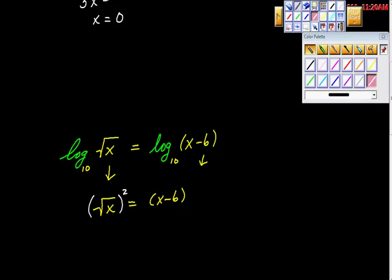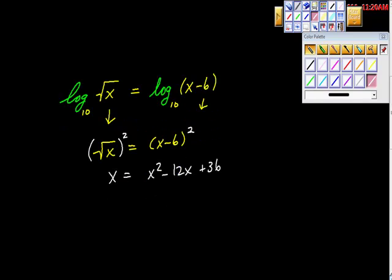And then we start solving. Now we're just finally back to some simple algebra. If we square this side to get rid of this, then we have to square this side. So we get x is equal to, if we foil this out, we get x squared minus 12x plus 36.